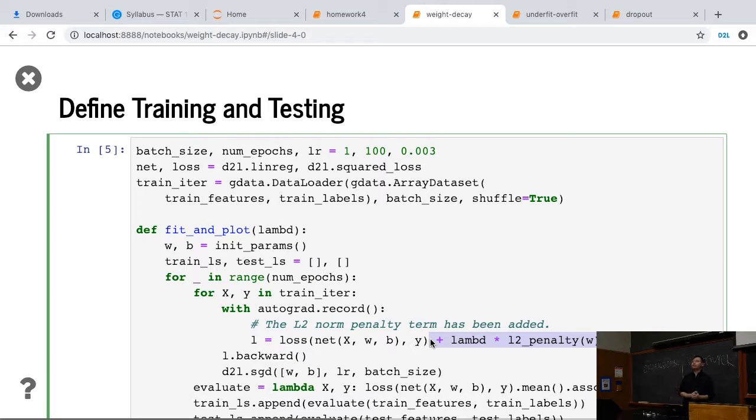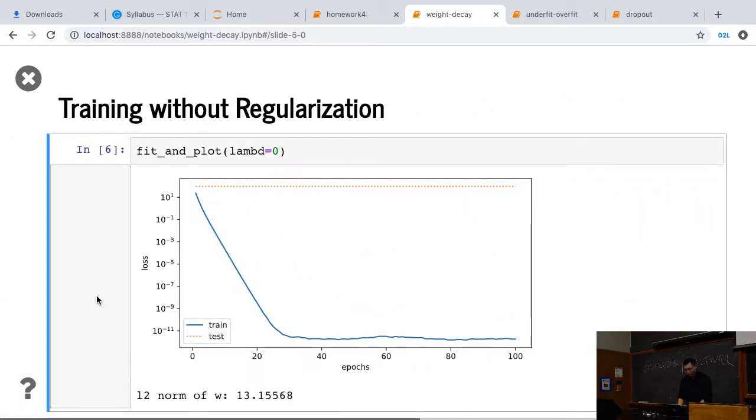All the others are similar to before. Okay? Then ignore that. So let's first fit lambda equal to 0, which means no regularizations here.